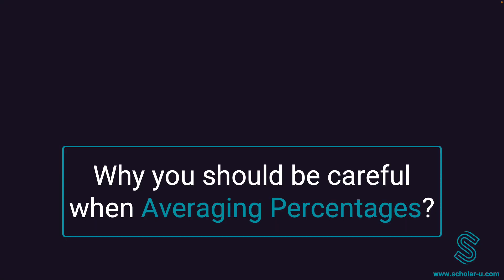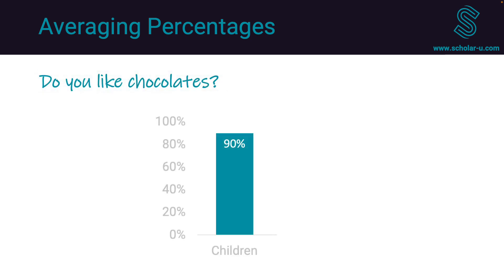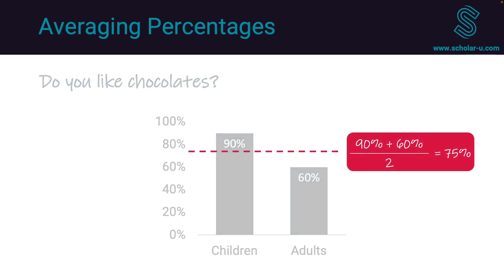Why you should be careful when averaging percentages. Let's say we run a candy factory and we survey some of our customers, asking a simple question: do you like chocolates? Not surprisingly, 90% of the children who responded say that they love chocolates, compared to only 60% of the adults. Can we conclude that 75% of the population likes chocolates? 75% would be the average of 90 and 60%.